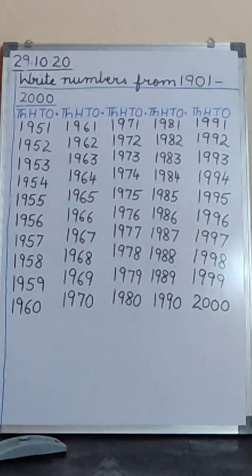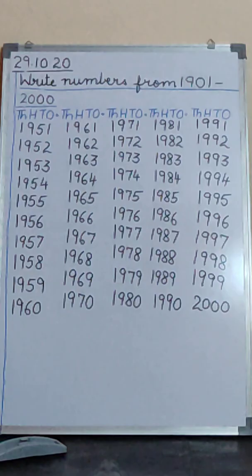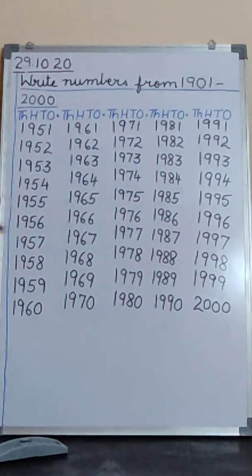So this is the end of our numbers. Now we have finished our numbers till 2000. We have learnt numbers from 1001 to 2000. I am sure now you all know your numbers very well. So do your work neatly.